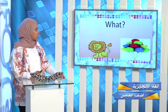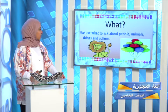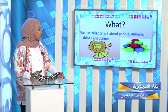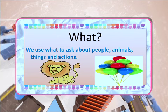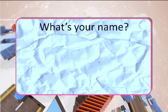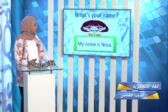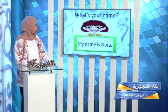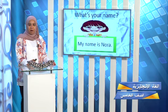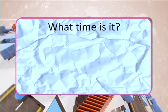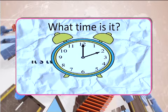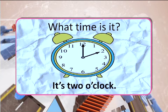Now we are going to have another question word. We use WHAT to ask about people, animals, things, or actions. For example: What's your name? I'm asking about you — so I'm using WHAT. My name is Nora. We use WHAT to ask about a person. What time is it? I'm asking about a thing. It's 2 o'clock.